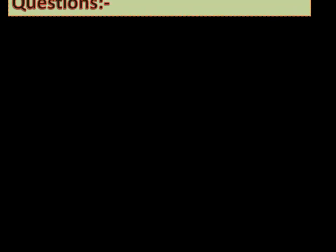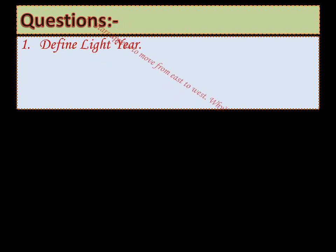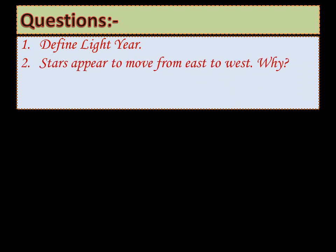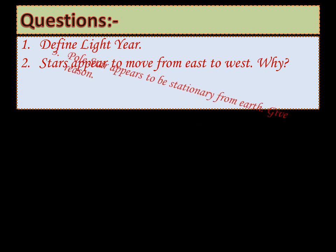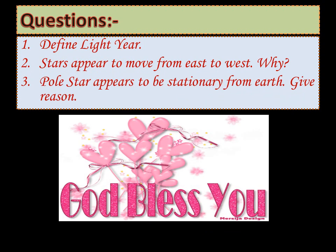Dear children, we are concluding today's topic. I hope today's topic is clear to you. Please write down the answers to the following questions in your notebook. Question 1: Define light year. Question 2: Stars appear to move from east to west — why? Question 3: Pole star appears to be stationary from Earth — give reason. I hope you all are safe. Thank you. God bless you.